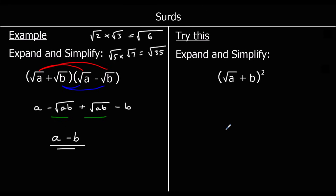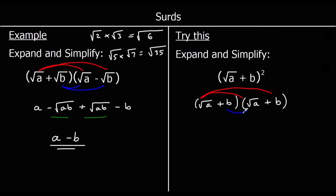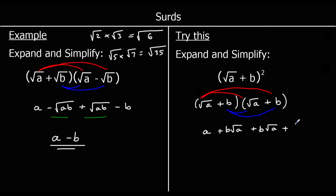We've got root A plus B all squared, which means root A plus B times root A plus B. We're going to do root A times both terms in the second bracket, and then B times both terms. Root A times root A is A. Root A times B — in the same way that root A times 5 would be 5 root A — root A times B is B root A, which just means B times root A. Then B times root A, which we again write as B root A. And then B times B, which is B squared.